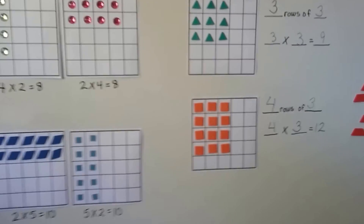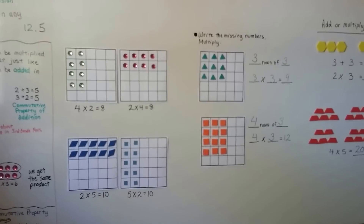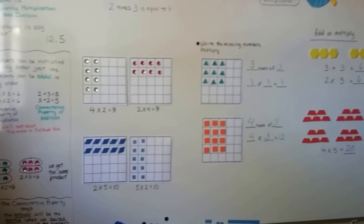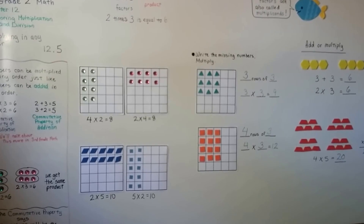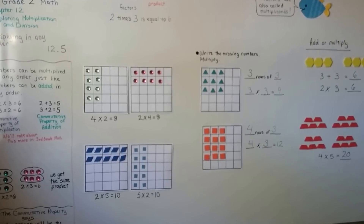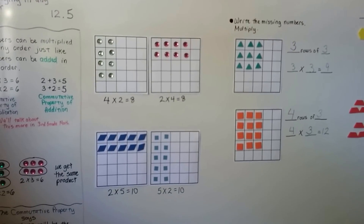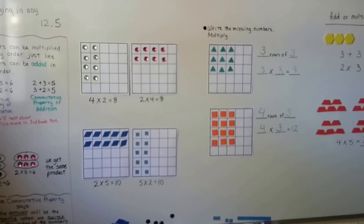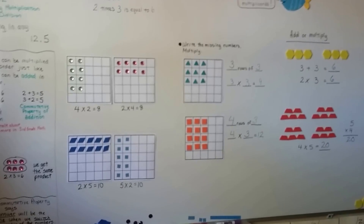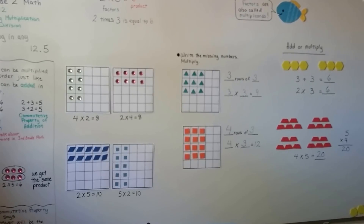Remember that a multiplication sentence is just a number sentence that has multiplication in it — just like an addition sentence is a number sentence with a plus sign, and a subtraction sentence is a number sentence with a minus sign. We're going to continue on and keep talking about multiplying, and we're going to solve some word problems that involve multiplication. I'll see you there — have a great day, and don't forget to hit the like button if I helped!